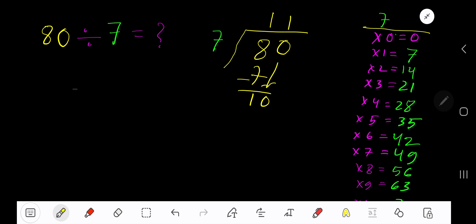So 1 time. 1 times 7 is 7. Subtract 3. So your answer should be 11 remainder 3. If you want to write your answer in decimal form, then take your decimal, add number of zeros, bring down the first zero.